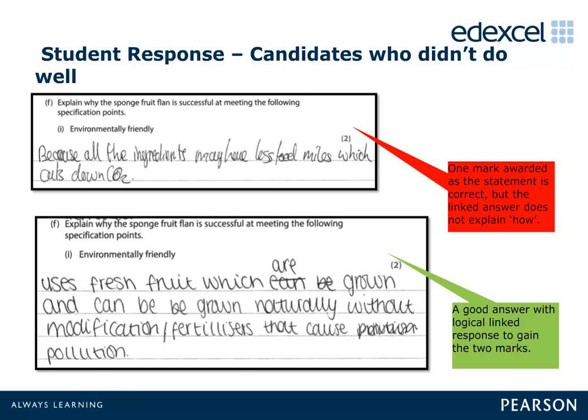Many gained one mark for stating the packaging would be recyclable. The most popular correct response was using local fruit to reduce food miles.